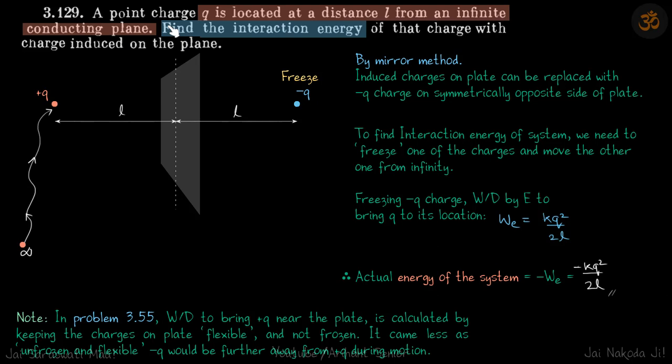We have a point charge Q located at a distance L from an infinite conducting plane. We need to find the interaction energy of this charge with the charge induced on the plane. First, we can replace this plane with a minus Q charge using the mirror method — induced charges on the plate can be replaced with a minus Q charge on the symmetrically opposite side of the plate, also at distance L.